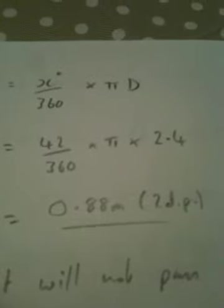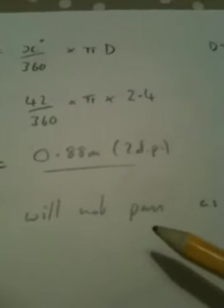The context of the question relates to a staircase. It says the arc BC must be at least 0.9 metres. Well it isn't, so no, it will not pass regulations as 0.88 is less than 0.9.